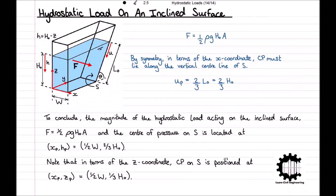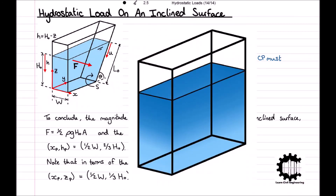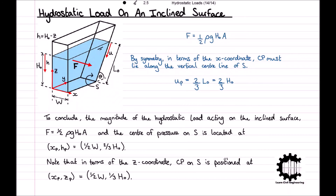Now, we have seen how to calculate the hydrostatic load and find the point of action of that load on horizontal, vertical and inclined planar surfaces for homogeneous liquids. In the next video, we will work through an example for calculating the hydrostatic load and point of action on a vertical end wall with a continuously stratified liquid, where the density of the liquid increases with depth below the free surface. This has been a video by Learn Civil Engineering. If you found this video useful, please leave a like and subscribe to the channel. If you have any remaining questions or would like me to cover a specific topic, please leave them in the comment section below and I will try to respond as soon as possible. Thank you for watching.